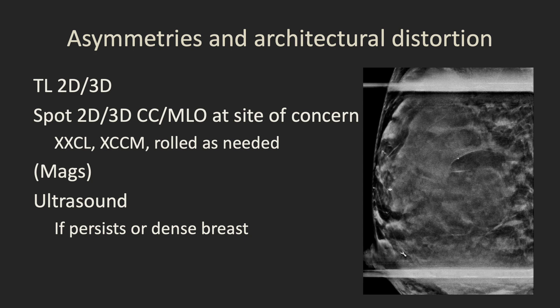For callbacks for asymmetries and architectural distortions, we usually start with a true lateral 2D and 3D, then do focal spots 2D and 3D in any views where we saw the abnormality — it might be CC and MLO or one or the other. We include additional imaging such as XCCLs or XCCMs for far medial or far lateral abnormalities, and we may include rolled views if the area does not efface or we have concern about it. Some institutions prefer MAG views rather than spot 2D/3D views; we prefer spot views and find them most helpful unless there are calcifications. If the abnormality persists or the breast is dense enough that we're unsure it's really effaced, we go on to ultrasound.